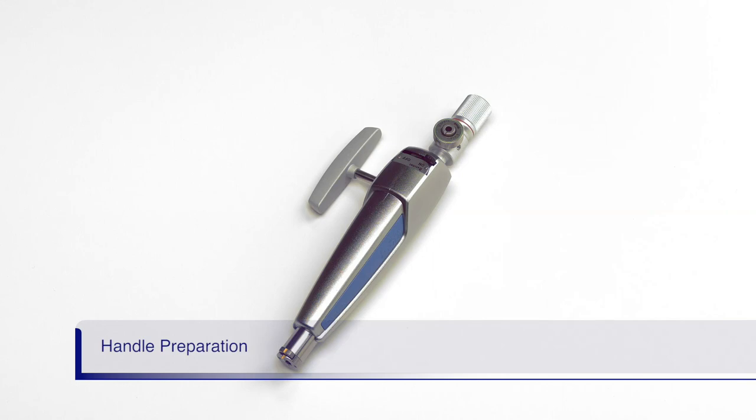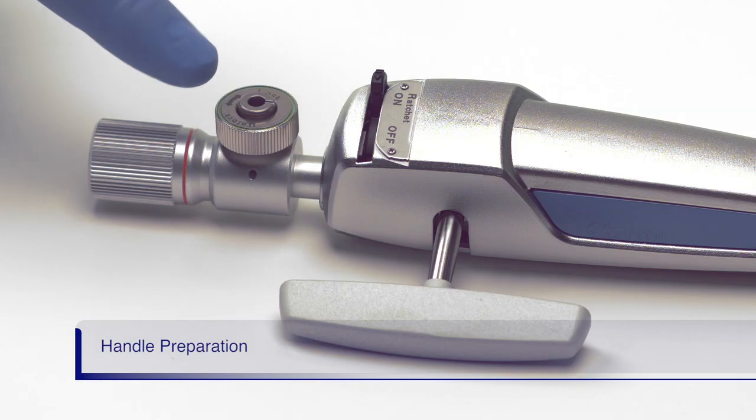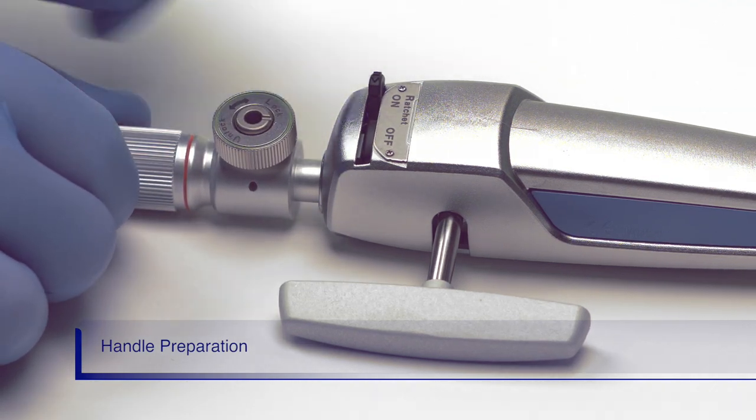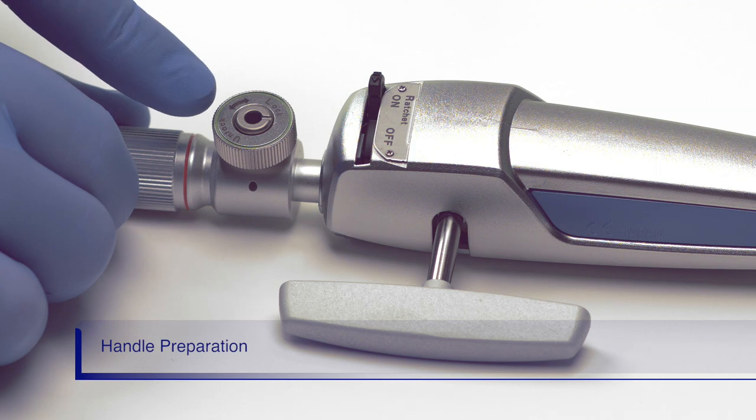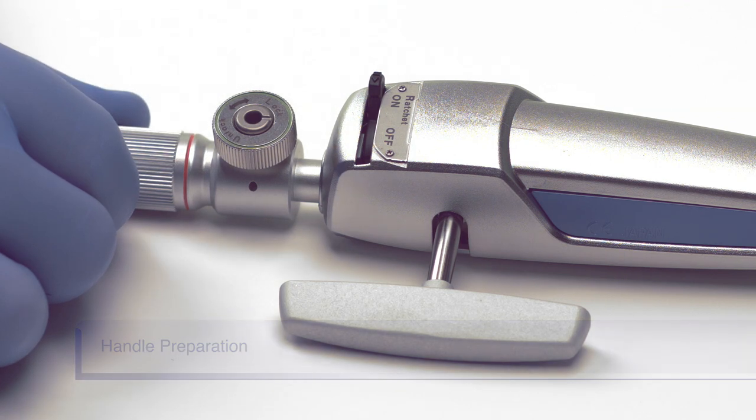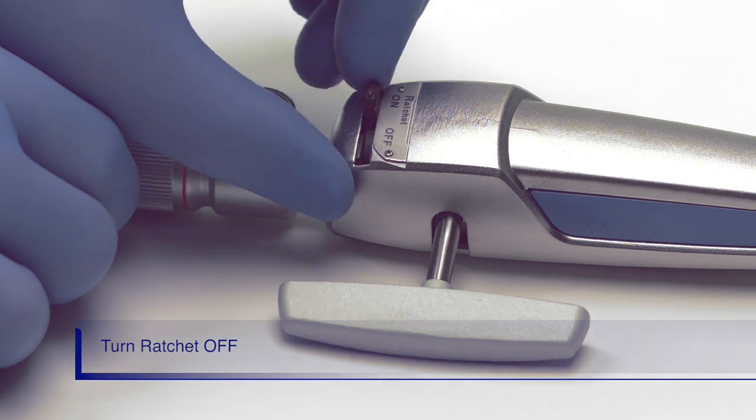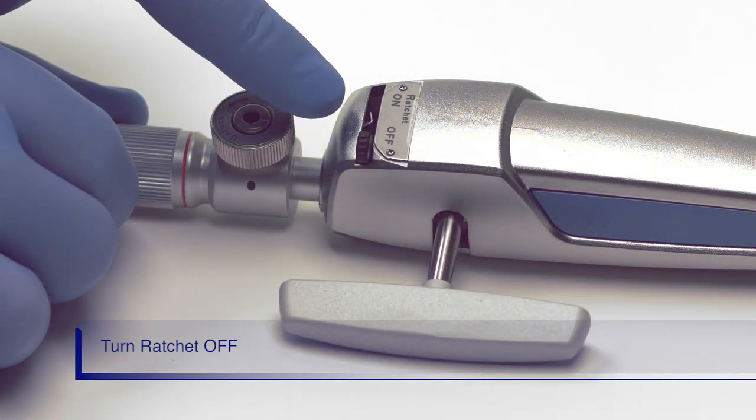Let's review the handle preparation. The unlock release button needs to be fully turned counter-clockwise as shown. If it is turned too far, the button will be in the locked position. Once the knob is fully unlocked, push the ratchet switch into the OFF position.